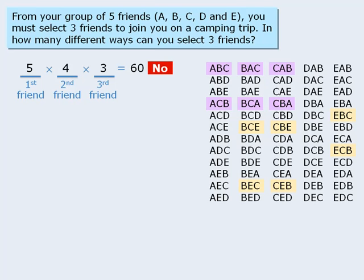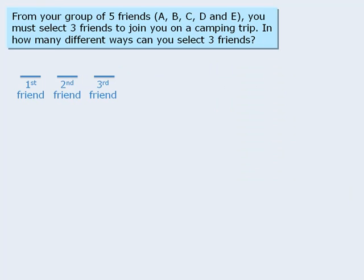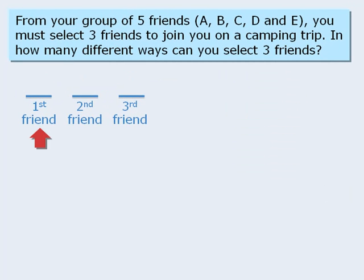But what's the problem here? Up to this point, the strategy of breaking a task into stages has worked. Well, the problem is with our stages. One stage is to select the first friend, and another stage is to select the second friend. We are treating these two stages as different stages when their outcomes are the same. It doesn't matter whether someone is selected as the first friend or the second friend, the outcome is the same. That person is going camping.